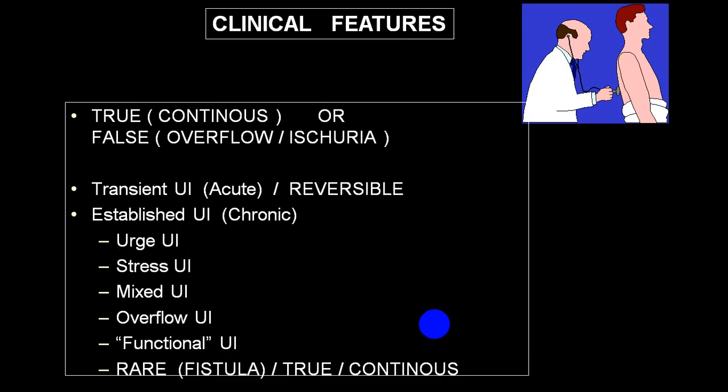The presentation is continuous in case of congenital anomalies like fistula, and in case of overflow there is retention with overflow dribbling, called false incontinence or ischuria paradoxica. Acute incontinence is usually transient and reversible, while established incontinence is long-term and chronic, including urge incontinence, stress incontinence, mixed, overflow, or functional incontinence.